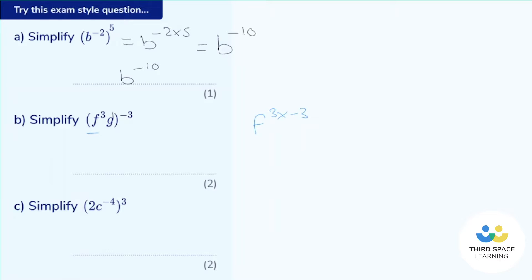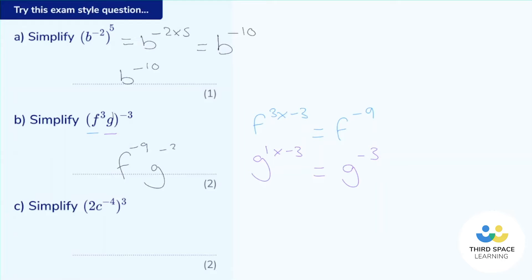So it's three multiplied by negative three — three multiplied by negative three is just negative nine, giving f to the power of negative nine. Now let's look at the g. We've got g to the power of one, and we're going to multiply that power by the power outside the bracket, which is negative three. One multiplied by negative three is negative three, so that's g to the power of negative three. Putting it all together: f to the power of negative nine, g to the power of negative three.